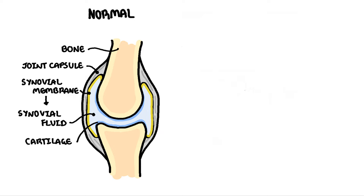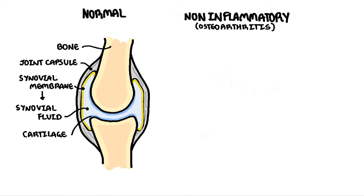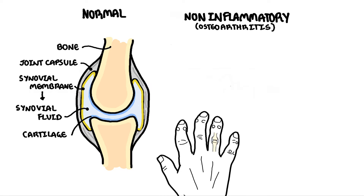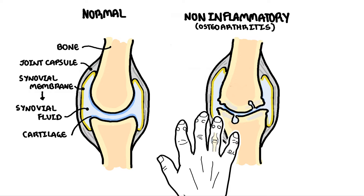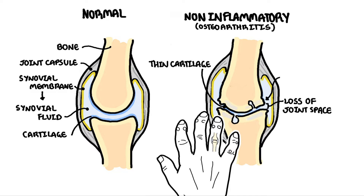Let us take a look at some features of non-inflammatory arthritis, which is osteoarthritis. Here is a hand of someone with osteoarthritis. Looking into this osteoarthritic joint, there are some noticeable changes. First of all, there is thinning of the cartilage and loss of joint space. The loss of space triggers bone cells to grow and form osteophytes.